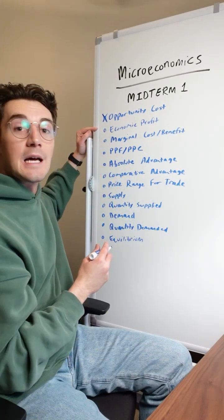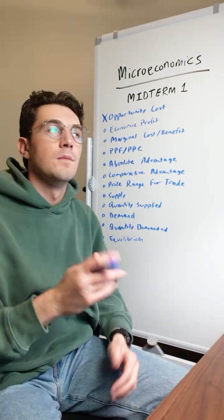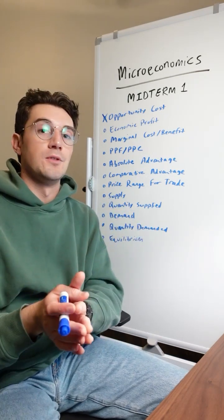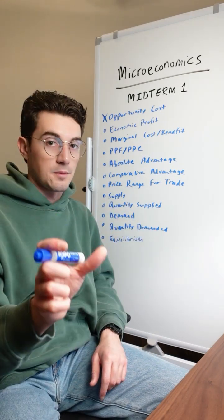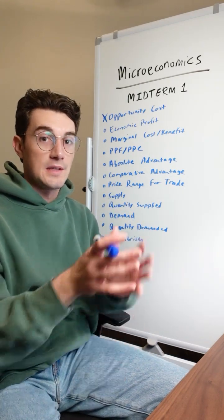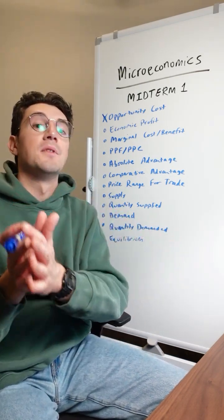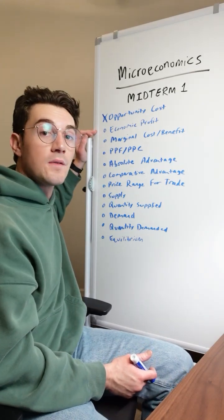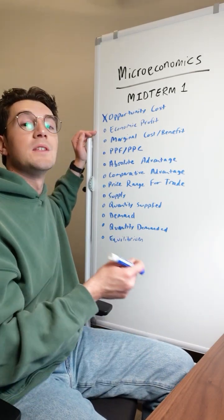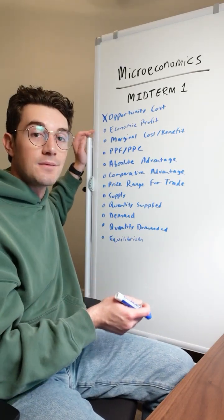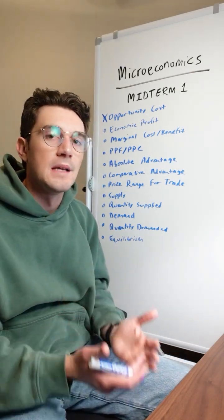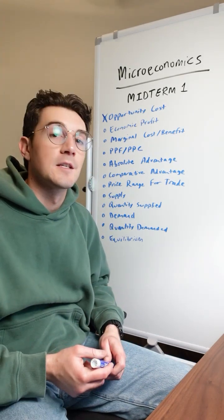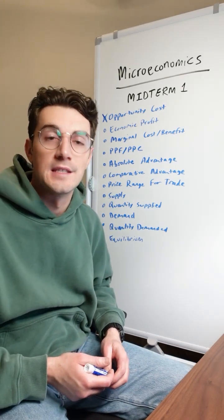Next up is economic profit. The formula for this is total revenue minus opportunity cost, because opportunity cost factors in the explicit and implicit cost of whatever you're doing. Whenever this is negative, that means you're making the wrong choice and you should have picked the next best alternative instead.